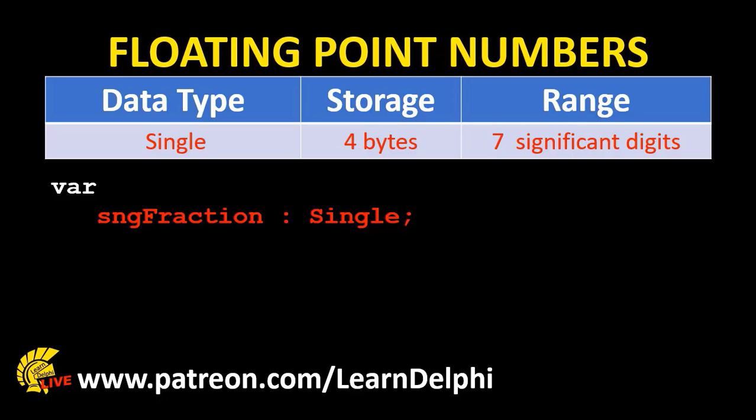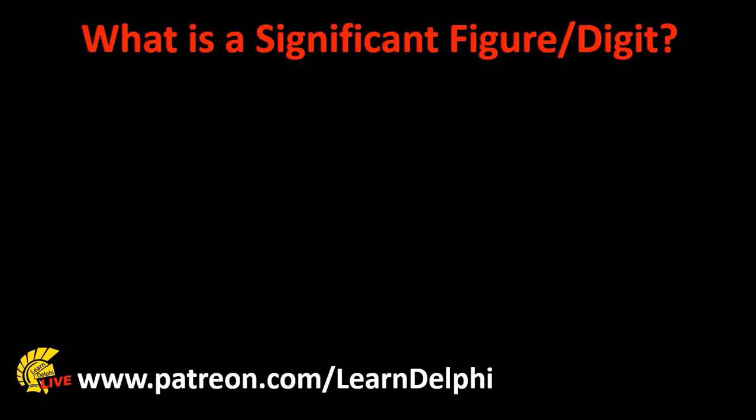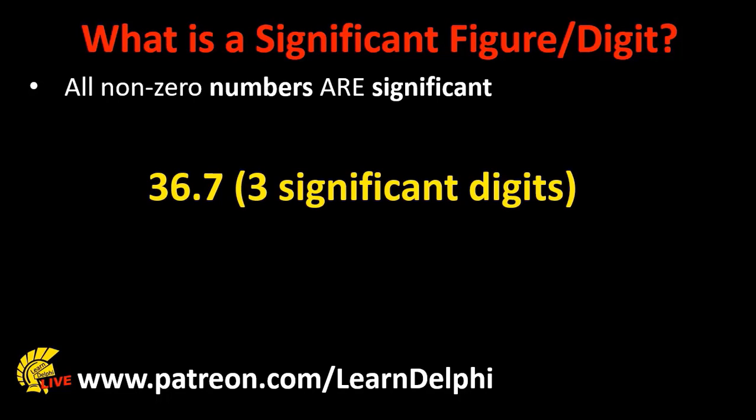But what does that mean? Before we go on, let's first see what is a significant digit. You will hear me often talk about significant digits when I refer to the capacities of floating point numbers. Let's look at the characteristics of significant digits. Firstly, all non-zero numbers are significant. For example, the number 36.7 has 3 significant digits — that is the 3 and the 6 in front of the point, and the 7 after the point.